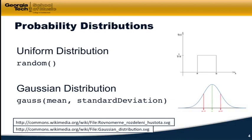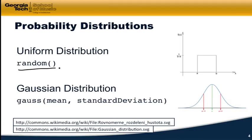The first thing to talk about is probability distributions. So far, we've been using things like Python's random function, which gives us uniform distributions where every outcome is equally likely — just as likely to get any number between zero and one. Same as flipping a coin: you might get three heads in a row, but after thousands of flips you converge on a uniform distribution with about equal heads and tails. Now we're going to look at a different kind — a Gaussian distribution.